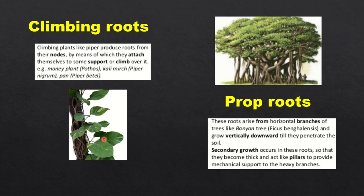Moving to climbing roots. Climbing plants like piper produce roots from their nodal region — nodes are portions from where leaves come out. By means of these climbing roots they attach themselves to some support or climb over it. This is found in money plant, black pepper or kalimirch, beetle leaves, and piper betle, commonly known as paan.